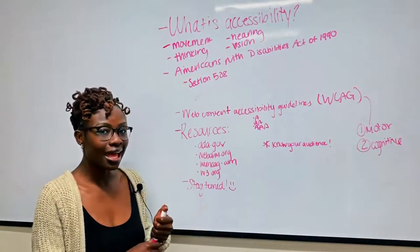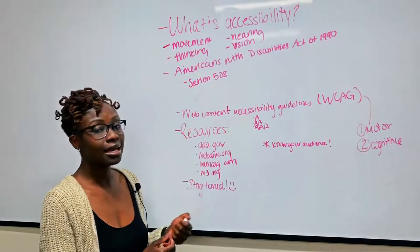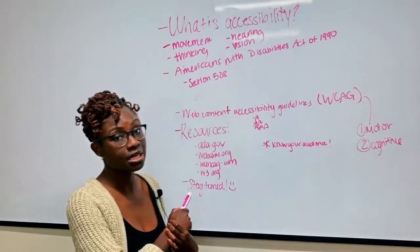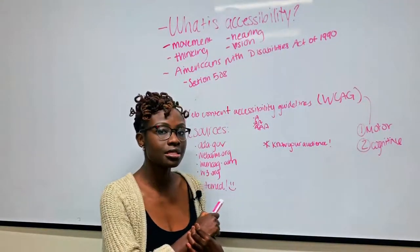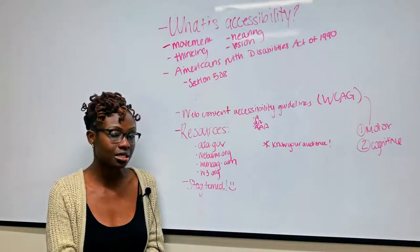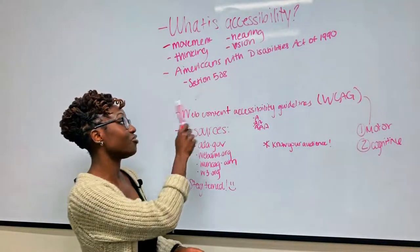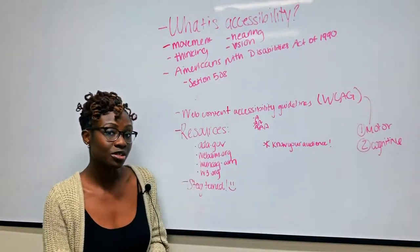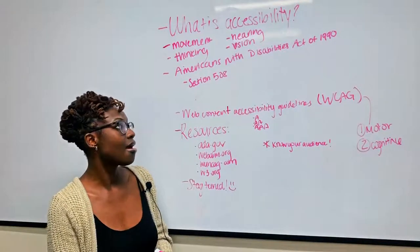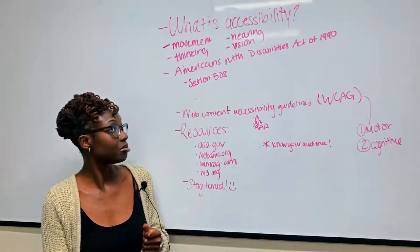To ensure that people with disabilities can access commodities in the same way, the Americans with Disabilities Act of 1990 was created, and this simply prohibits discrimination against a person with a disability or disabilities. Within that is Section 508, and that ensures that government agencies make their electronic information accessible to a person with a disability.